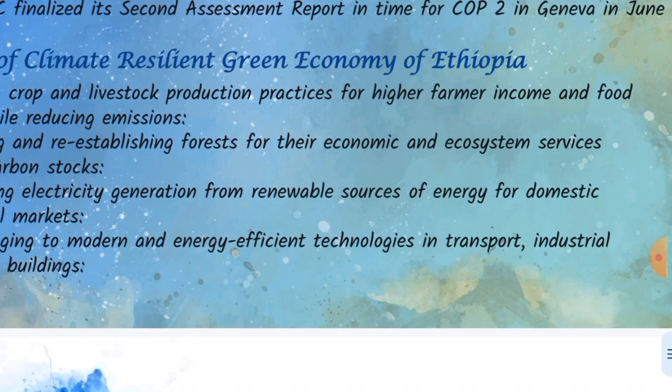Expanding electricity generation from renewable resources of energy for domestic and regional markets. This is a mitigation method that is used to build energy resources in Ethiopia. We are looking at the agricultural products and forests and the resources available for electric power in the country.